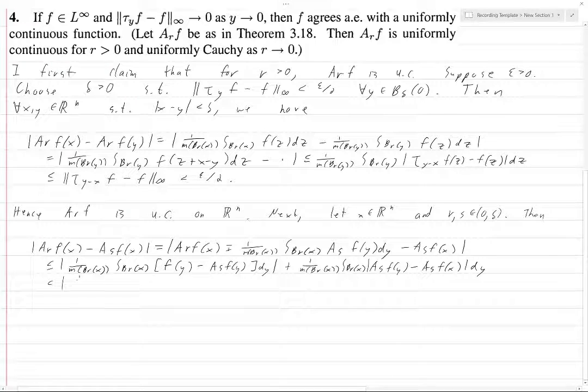What are we going to do with the thing on the left? Let's actually write it out as a full integral. Then we've got f of y minus, and let's write this guy out, the integral over the ball of radius s around y of f(z) dz, and then this whole thing dy, absolute value, plus epsilon over 2.